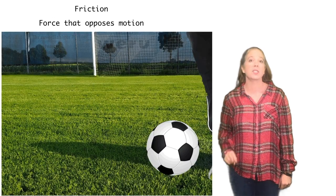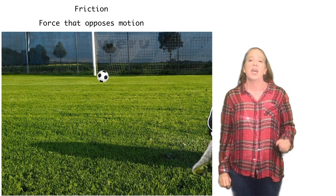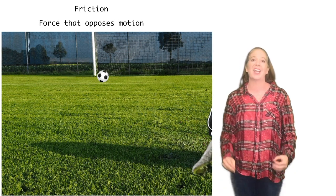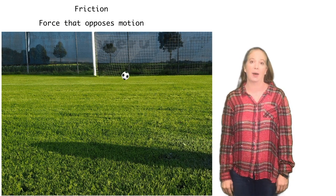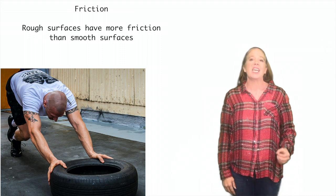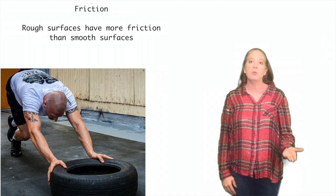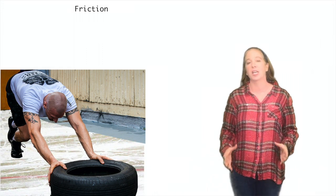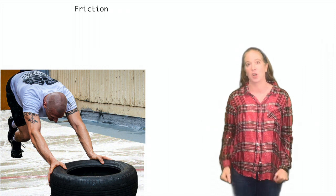Friction is a force that opposes motion. Friction from this grass slows that soccer ball down and causes it eventually to stop. Rough surfaces like this asphalt have more friction than smooth surfaces like the ice. So it's actually easier to push the tire on the ice than it is on the asphalt.